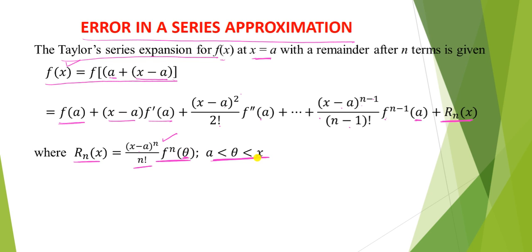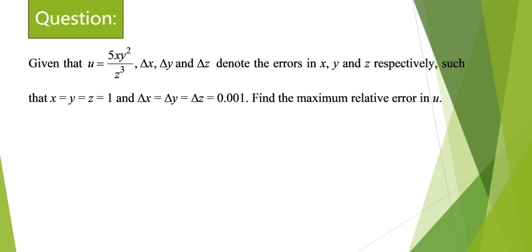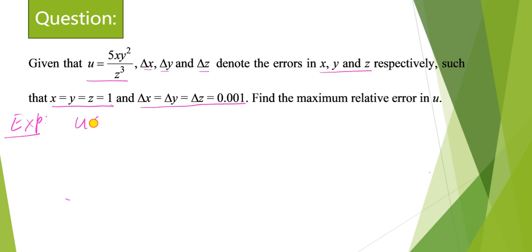This is the error in series approximation and this is the general error formula. Now taking a question based on errors: given that u equals 5xy² upon ze³, where delta x, delta y, delta z denote the errors in x, y, and z respectively, such that x equals y equals z equals 1 and delta x equals delta y equals delta z equals 0.001. Find the maximum relative error in u.